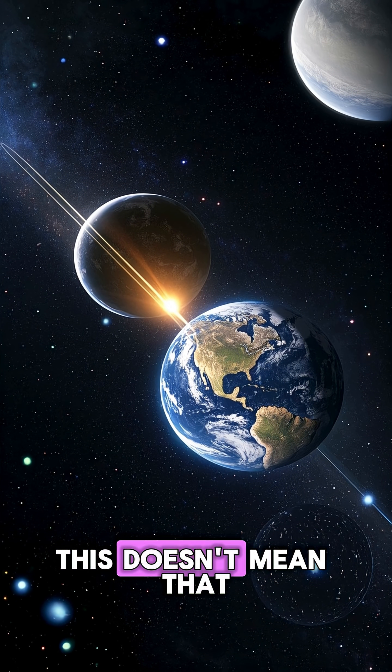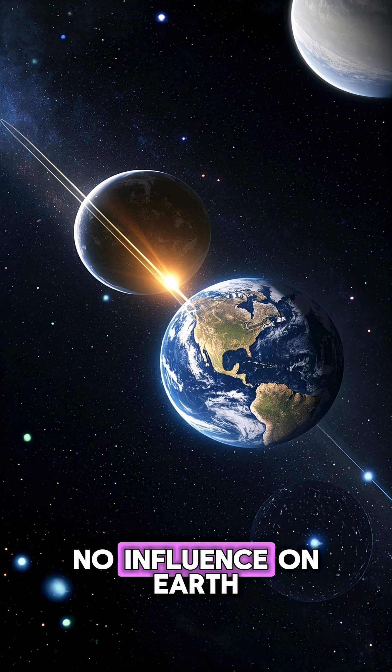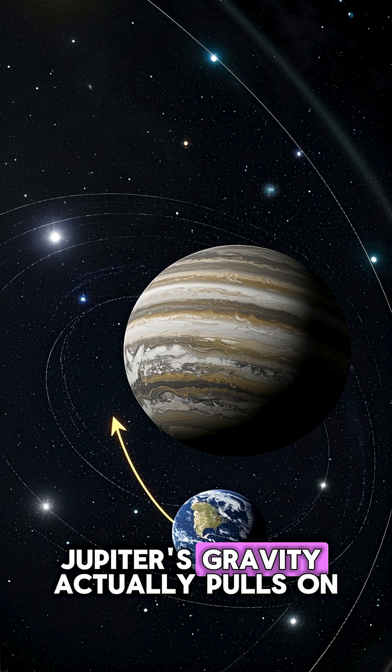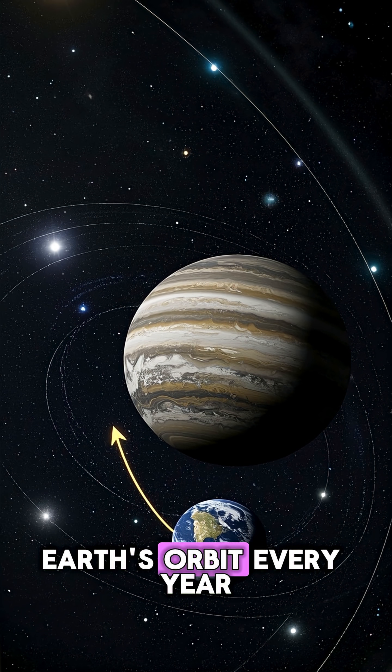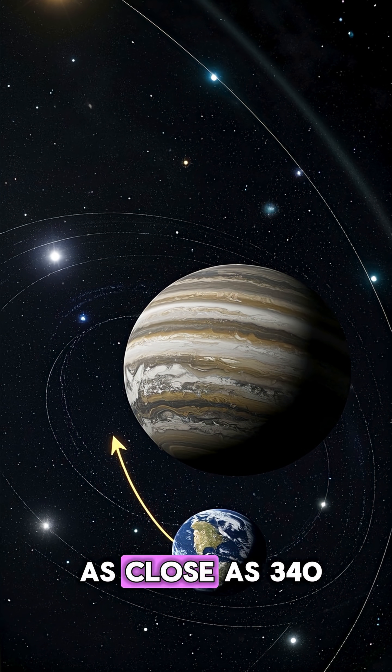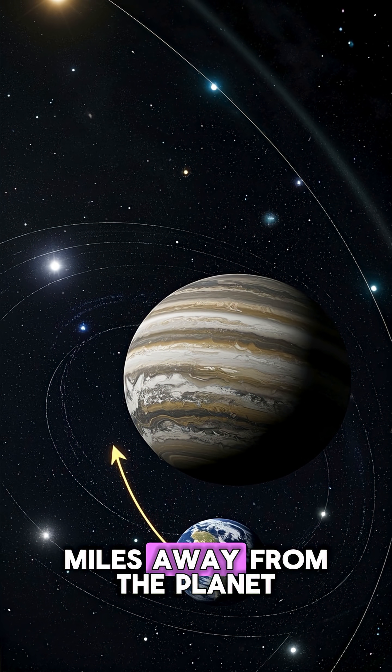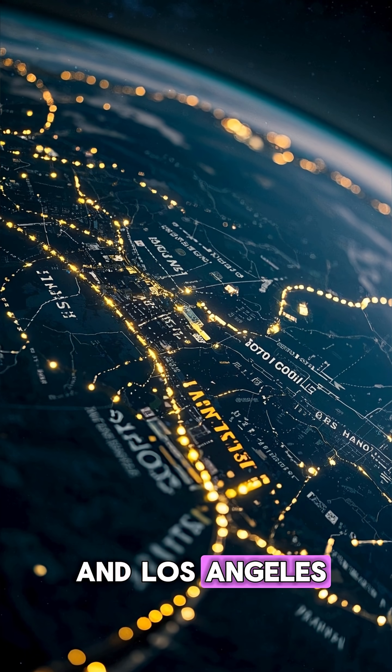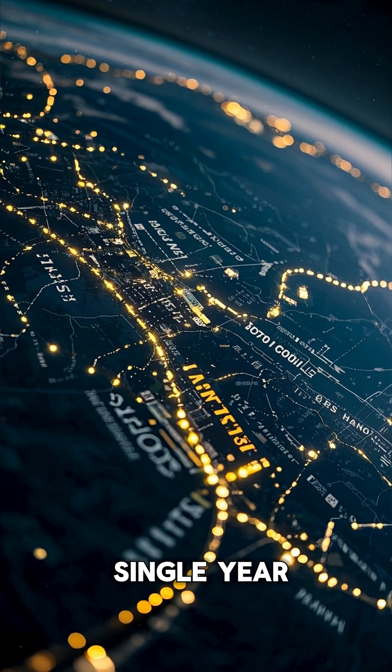However, this doesn't mean that the other planets have no influence on Earth. For example, Jupiter's gravity pulls on Earth's orbit, causing it to come as close as 340 miles away from the planet every year. That's closer than the distance between New York and Los Angeles, and this happens every single year.